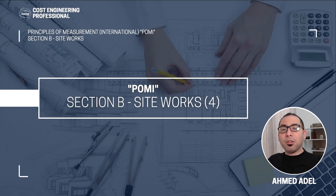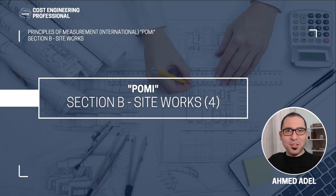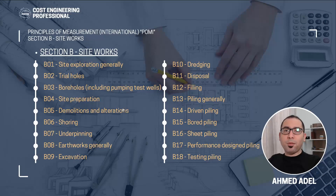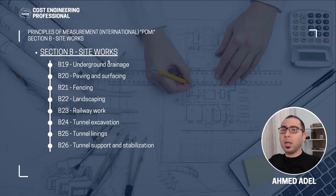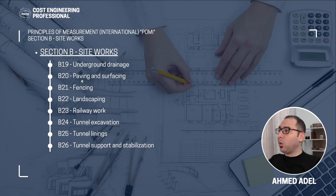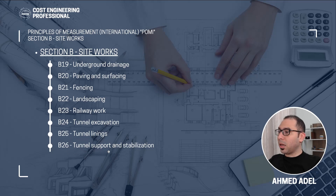Hello and welcome. In this video I'll continue explaining how to prepare siteworks BOQ in accordance with Principles of Measurement International. Previously we talked about all the subsections under siteworks, which is Section B. In this video we'll be talking about Section B19 underground drainage, B20 paving and surfacing, B21 fencing, B22 landscaping, B23 railway work, B24 tunnel excavation, B25 tunnel lining, and B26 tunnel support and stabilization.